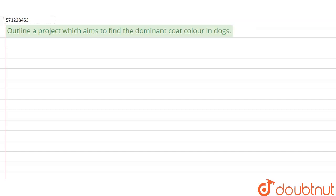In this question, they are asking us to outline a project for determining the dominant coat color in dogs. Now here we are talking about inheritance and the trait for which we have to find the pattern of inheritance is the coat color, that is the color of the fur in dogs.